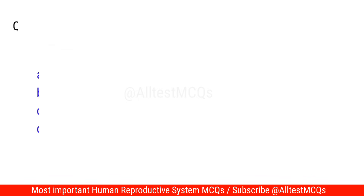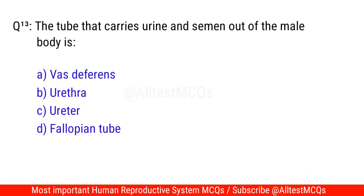Question No. 13: The tube that carries urine and semen out of the male body is? The correct option is D. Urethra.